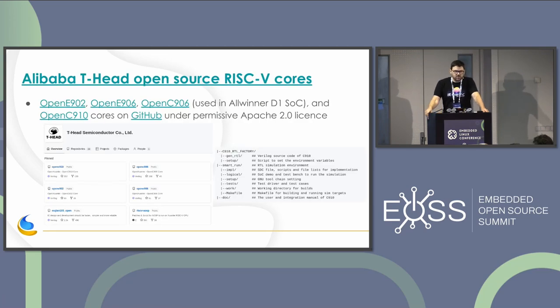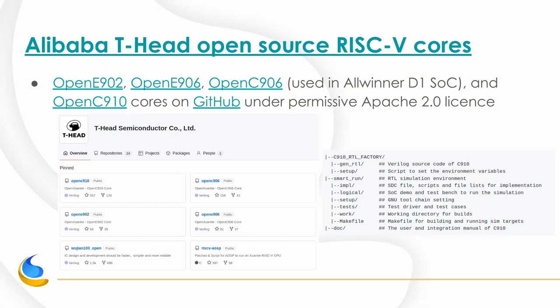One interesting thing: the Milk-V board has an SOC from SiFive with a core from Alibaba T-Head, which is an IP vendor that designs mostly cores. They released the RTL — the hardware description — using an HDL language for some of their cores. It's not necessarily the exact same RTL that was shipped in commercial SOCs, but it's on GitHub. Some people have actually been able to run it on FPGA as a soft core, which is quite interesting, and hopefully we see more of this.